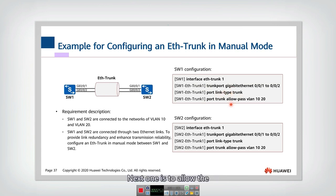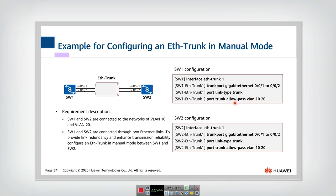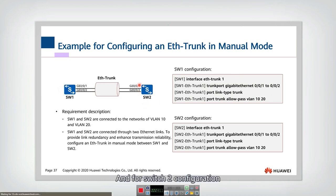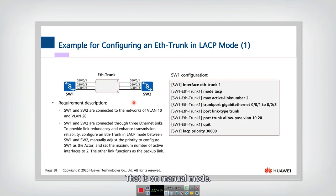Next we allow the corresponding VLANs to pass through it. In this trunk, VLAN 10 and VLAN 20 are allowed to go through. The configuration for switch two is exactly the same as switch one. That is the manual mode configuration.